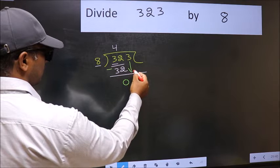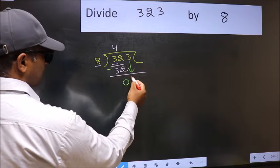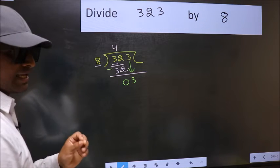After this, bring down the beside number, so 3 down. After this step, the mistake happens.